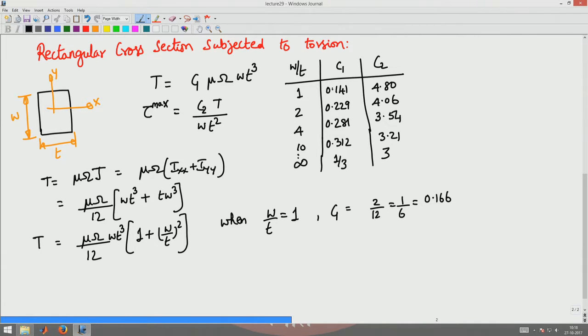The value is less than that because it warps. The value of C1 is less than that because it is warping. Usually warping will reduce the torque for a given angle of twist.